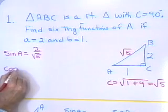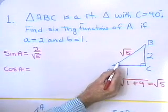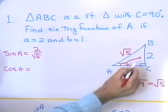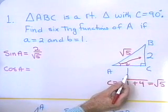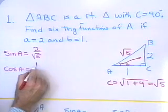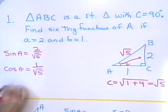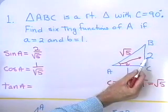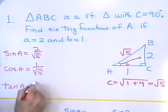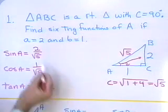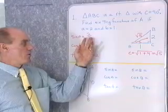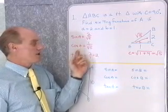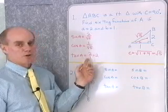The cosine of angle A is the side adjacent to angle A, which is 1, divided by the hypotenuse, so 1 over square root 5. The tangent of angle A is the ratio of the opposite side to the adjacent side: 2 over 1, which is just 2. I'll leave the denominators unrationalized for now. Let's find cosecant, secant, and cotangent using the reciprocal relationships.